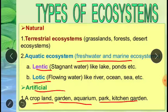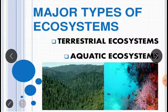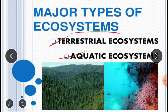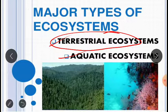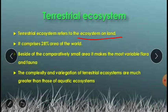Lentic is stagnant water like lakes and ponds, considered as the lentic ecosystem. Whereas lotic ecosystem includes flowing water like rivers, oceans, and seas. We will study in detail about it in the next video. Terrestrial ecosystem refers to the ecosystem on the land — whatever is present on the land. The sum total of abiotic and biotic factors and their interactions on the land is the terrestrial ecosystem.